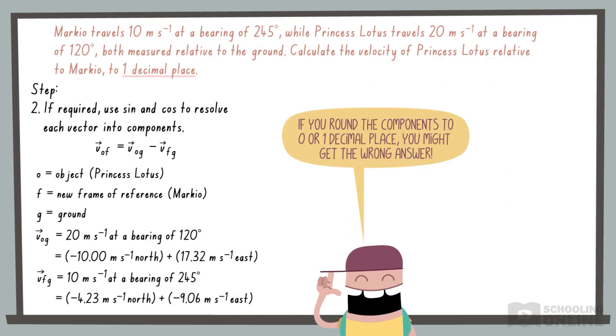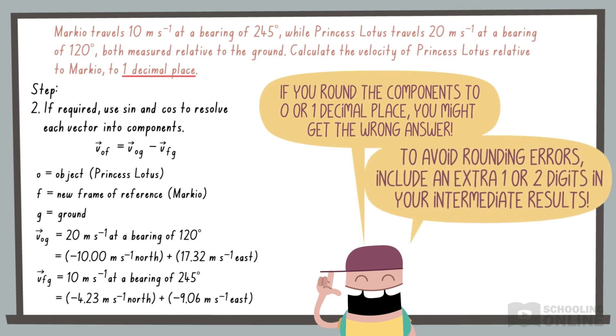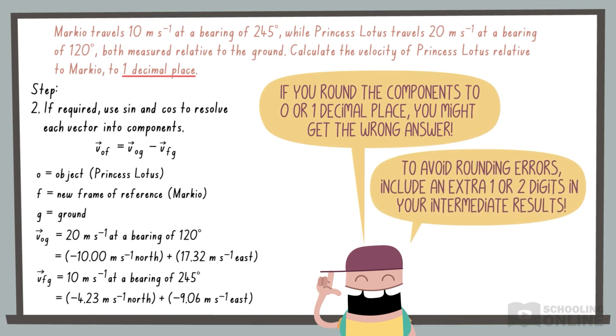Keep in mind that if you round the components to 0 or 1 decimal place, you might create rounding errors, leading to an incorrect final answer. To avoid this issue, you should always include an extra 1 or 2 digits in your intermediate results.